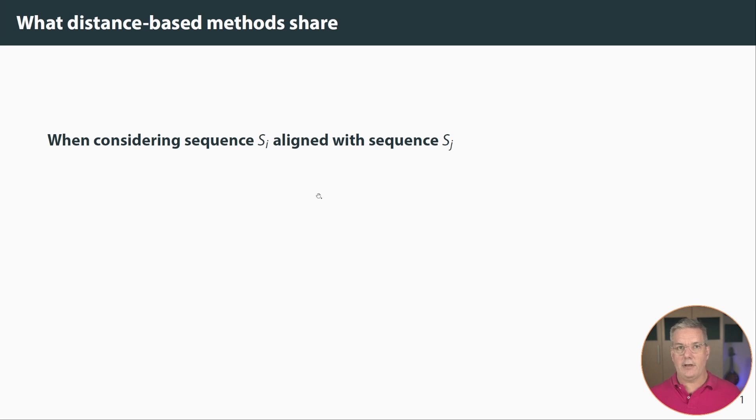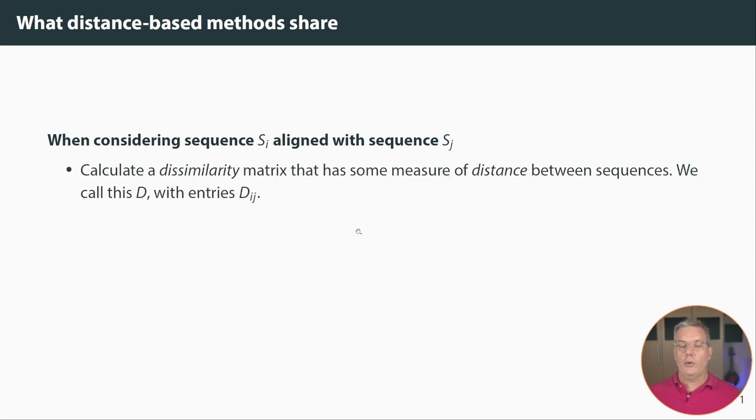Let's first back up and think about distance-based methods in general, UPGMA and neighbor joining primarily. Distance-based methods start by considering a multiple sequence alignment, and the sequences that are aligned in that multiple sequence alignment. We consider any pair of those sequences, s sub i and s sub j, and when we look at that pair, we can calculate a dissimilarity between them, and we can calculate then a matrix of dissimilarity that has some measure of distance between the sequences in our multiple sequence alignment. We call this matrix d and we call its entries d sub ij.